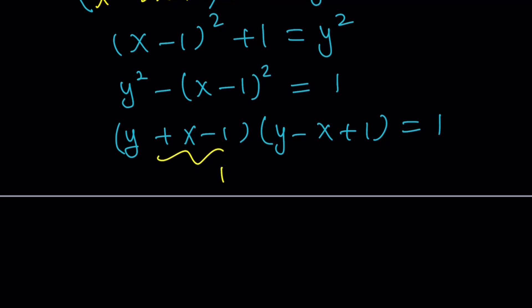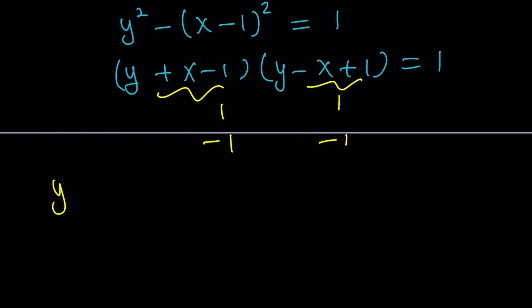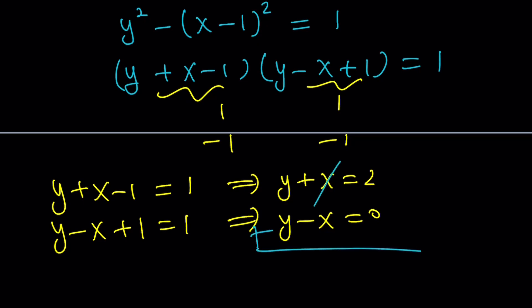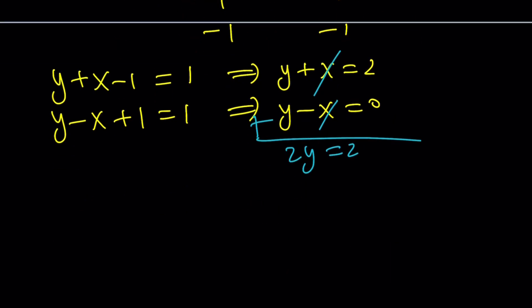So this can be 1, 1 or negative 1, negative 1. First case, y plus x minus 1 is equal to 1, and y minus x plus 1 is equal to 1. This implies that y plus x is equal to 2, and the second one implies y minus x equals 0. Now from here, we can go ahead and take these two equations and add them. X cancels out. We get 2y equals 2 and y equals 1. Since their sum is 2 or their difference is 0, this means x is also 1. But remember, this is problematic because we said earlier that y and x cannot be the same, because that would make our expression undefined. Therefore, we have to reject this solution set.